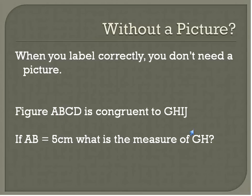But we know that A, B is congruent to G, H because that's the way we're labeling them. Therefore, G, H would be equal to five centimeters. We don't need a picture because we've labeled it correctly. And that is how you label a polygon and determine congruence.